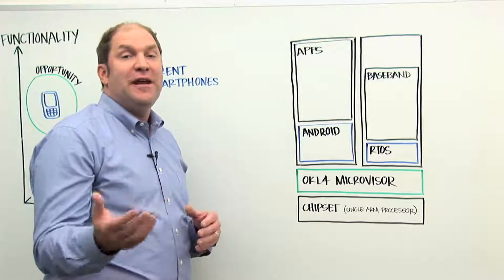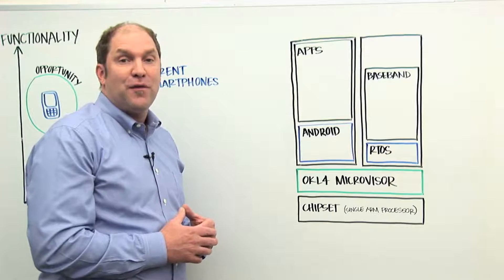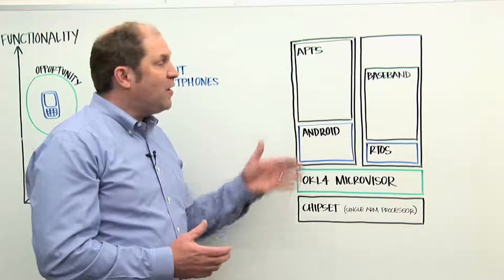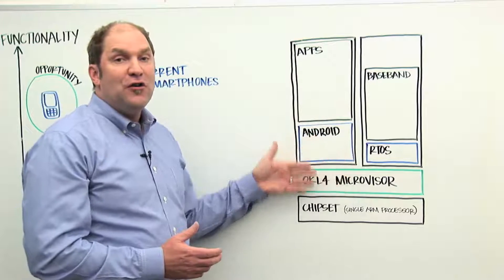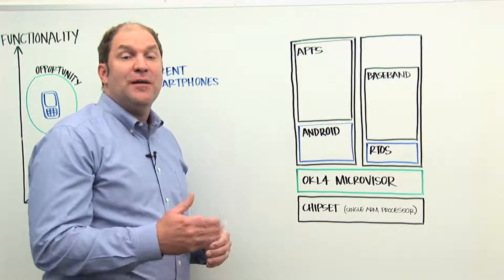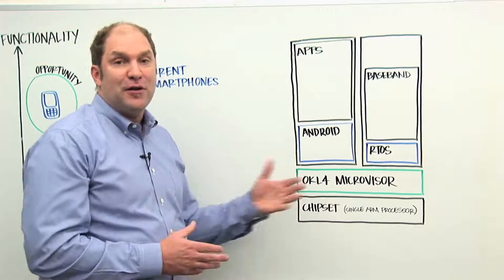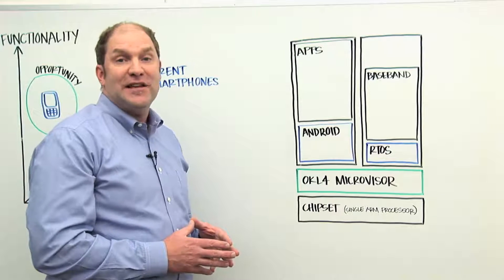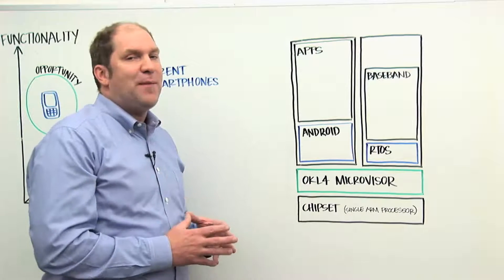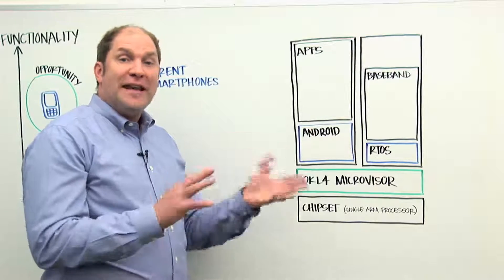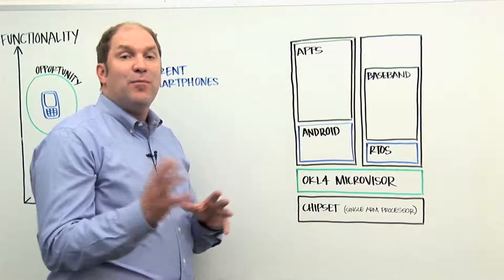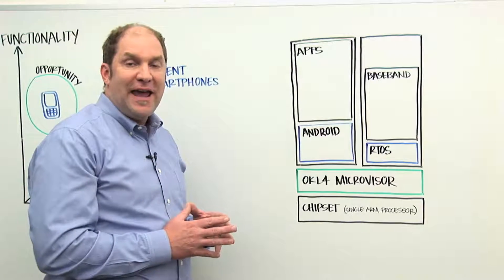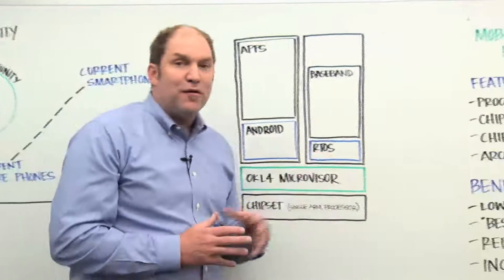In fact, in an analysis, which you can read in a white paper available from the Open Kernel Labs website, we show how using mobile virtualization, you can eliminate up to $46 in bill of materials cost per handset. So I encourage you to take a look at that white paper and look at the analysis and consider how it applies to your particular cases.